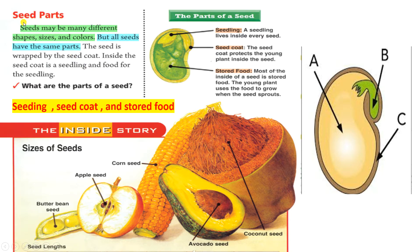Seed parts. Seeds may be many different shapes, sizes, and colors. But all seeds have the same parts. The seed is wrapped by the seed coat. Inside the seed coat is a seedling and food for the seedling. The parts of a seed are: seedling, seed coat, and stored food.